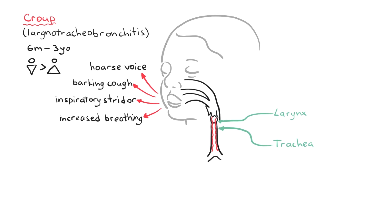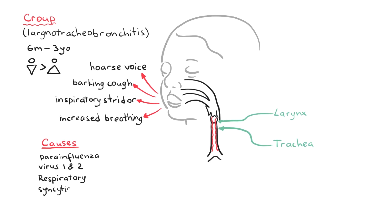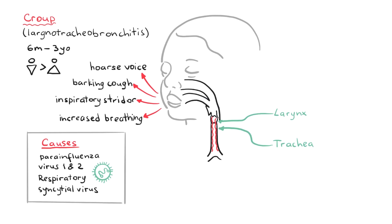The most common causes of croup are the parainfluenza virus 1 and 2. Respiratory syncytial virus is another cause of croup, and is also the main cause of bronchiolitis. Although acute viral infections are the most common cause of croup, bacterial and atypical agents have also been identified.